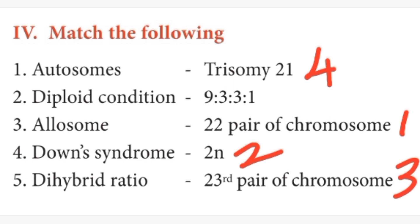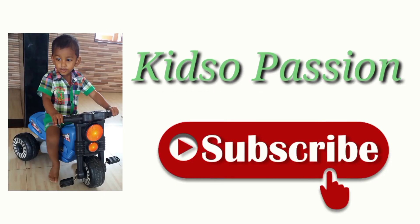Fifth question: dihybrid ratio — answer is 9:3:3:1. Thank you viewers for watching my video. Please subscribe to our channel. Thank you.